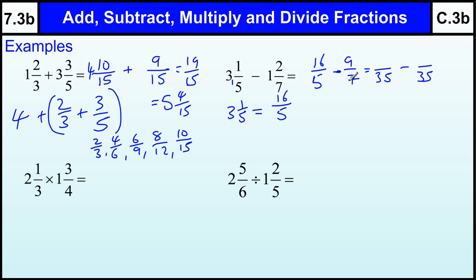And from there we need to change to 35ths. 5 is going to 35 seven times. And 7 times 16 is 112. 7 goes into 35 five times. 5 nines are 45. So we've got 112 minus 45, which is 67 over 35. Let's just check that. 72 minus 5 is 67, and we've got 35 minus 3, which is 32 over 35.